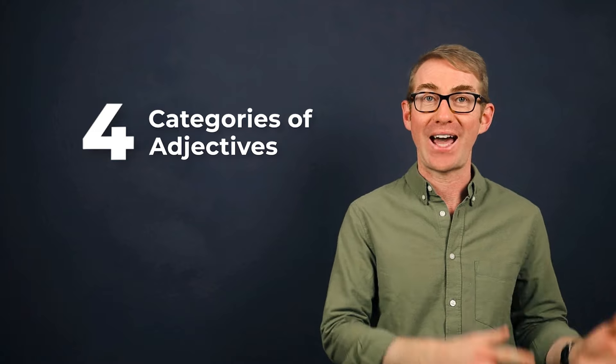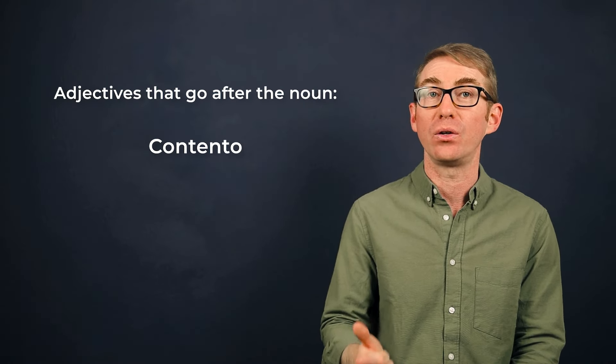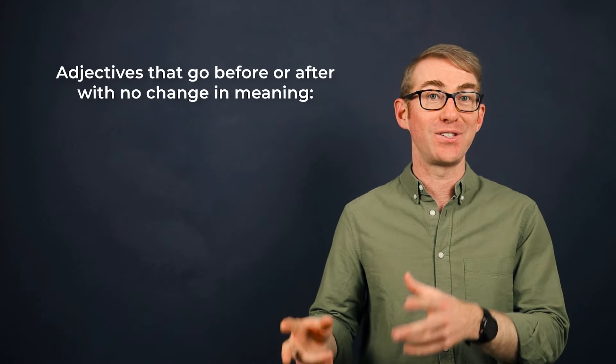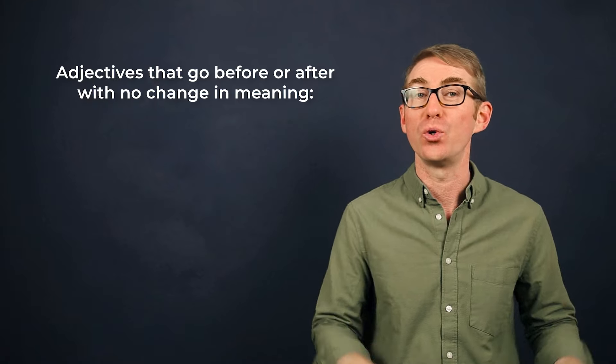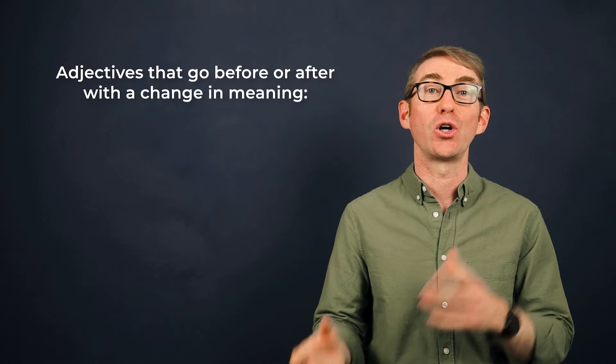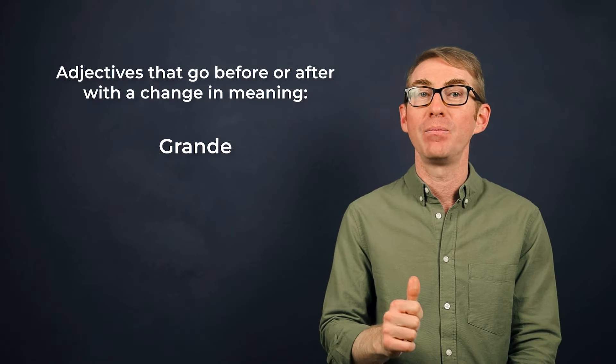So to summarize what we've looked at today, we can consider four categories of adjectives. Adjectives that go after the noun: contento, importante. Adjectives that go before the noun: primero, último. Adjectives that go before or after with no change in meaning: bueno, malo. Adjectives that go before or after with a change in meaning: grande, viejo.